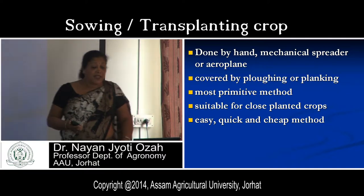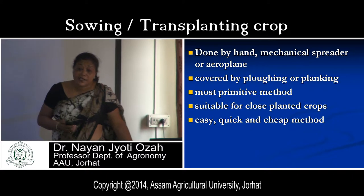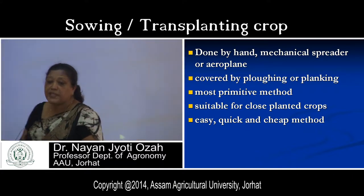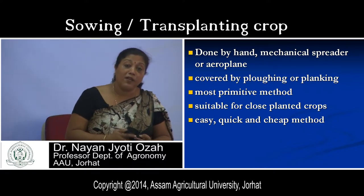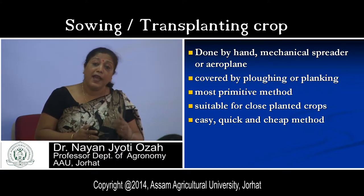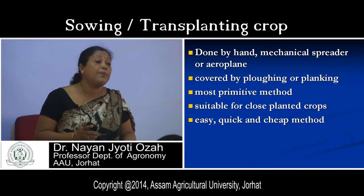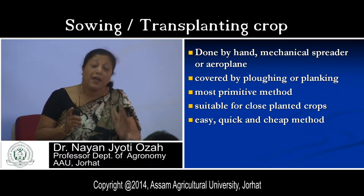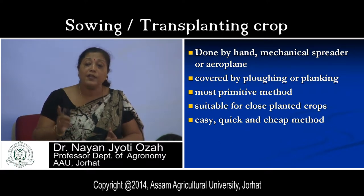Broadcasting is generally followed for closely-planted crops where spacing between lines or plant to plant is less important than plant population. You have to give more stress on maintaining plant population rather than maintaining row-to-row or line-to-line spacing. This method is very cheap, less costly, requires less time, and no technical know-how is required. That is why farmers follow this method.